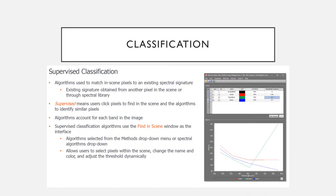Supervised classification algorithms are used to match in-scene pixels to existing spectral signatures — obtained from another pixel in the scene or through a spectral library. Supervised means you click pixels to find in the scene, and the algorithm is put in place to identify similar pixels. These algorithms take into account every band in the image. Supervised classification uses the Find in Scene window as an interface, with a method drop-down or spectral algorithm drop-down that allows users to select pixels, change names and colors, and adjust the threshold dynamically.